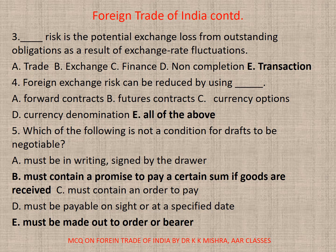Question 3: Dash risk is the potential exchange loss from outstanding obligations as a result of exchange rate fluctuations. Options: A. Trade, B. Exchange, C. Finance, D. Non-completion, E. Transaction. The correct option is E — Transaction.